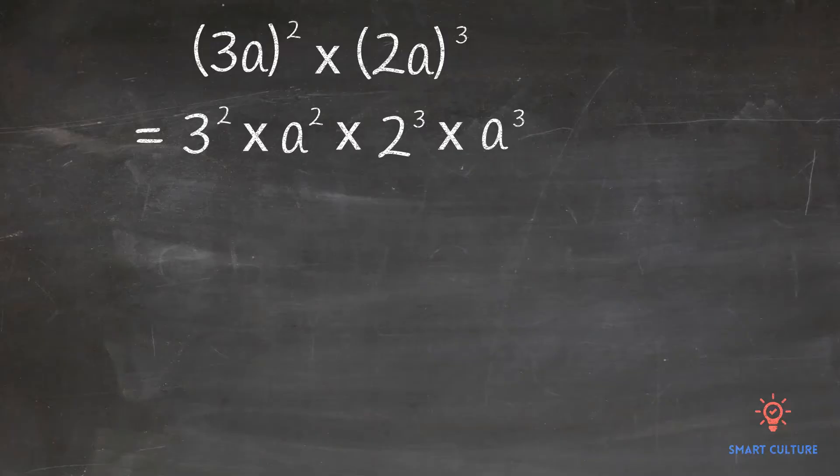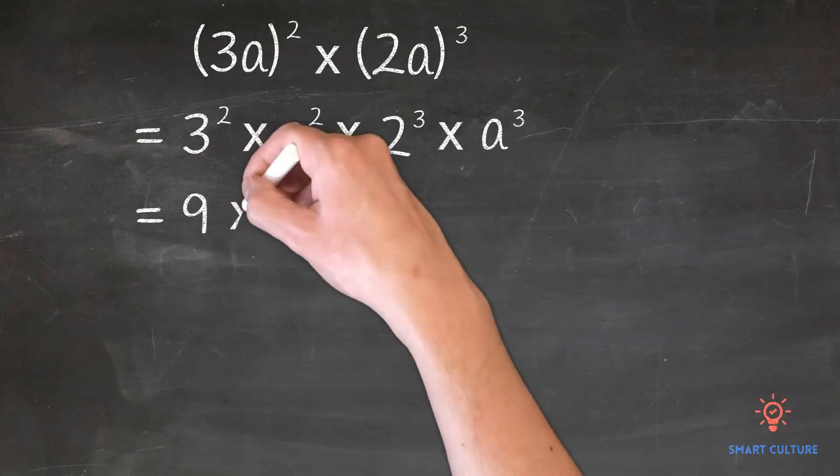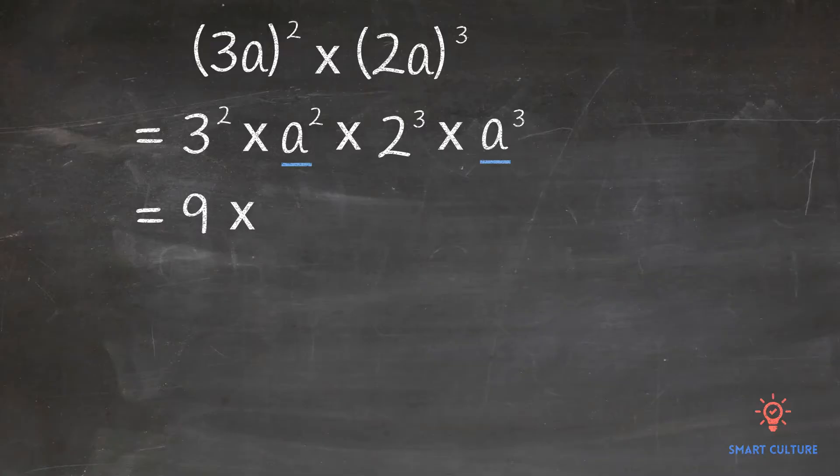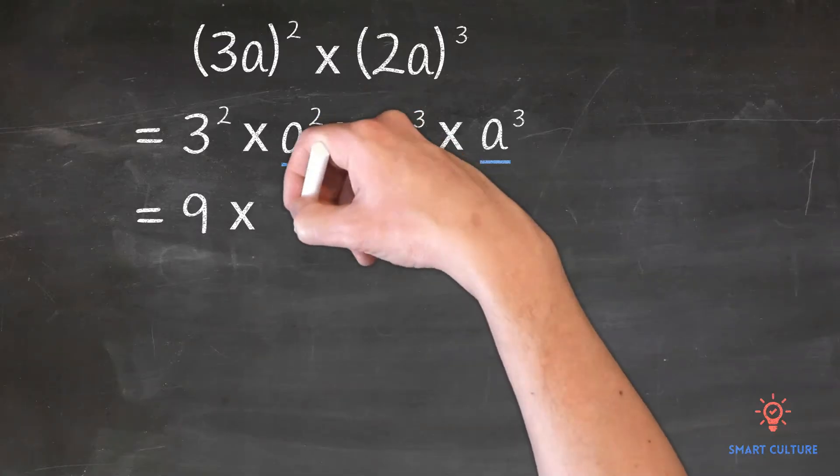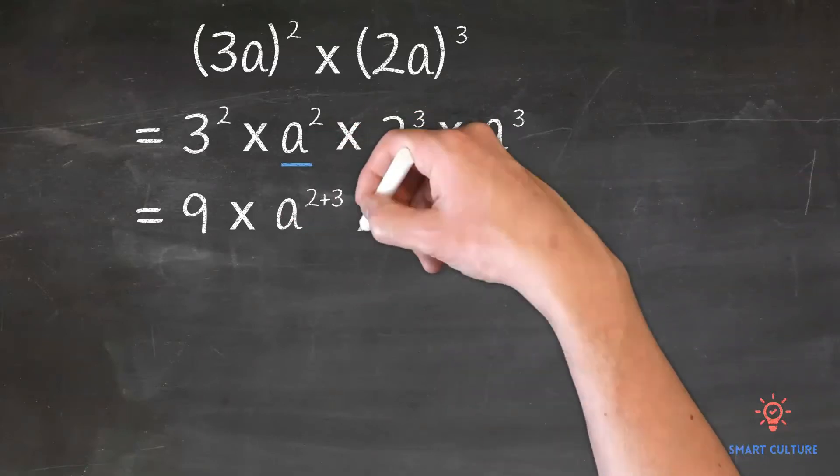Remember, the product of powers of the same base is equal to the same base raised to the sum of the exponents of the powers. 3 squared is equal to 9. a squared times a cubed is equal to a raised to the power of 2 plus 3. 2 cubed is equal to 8.